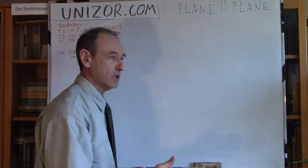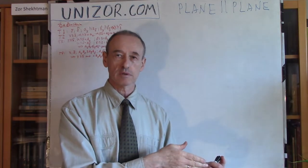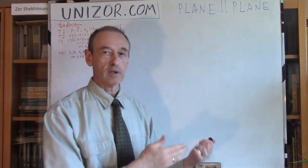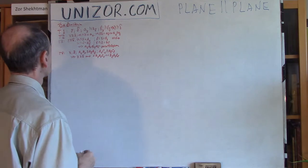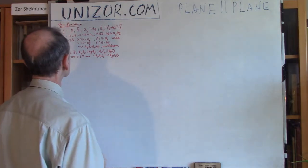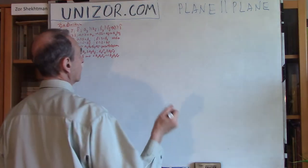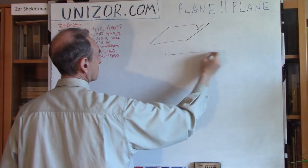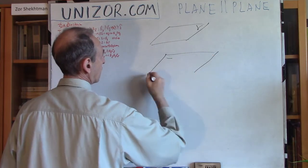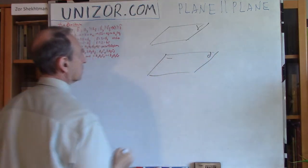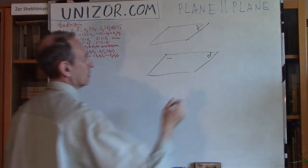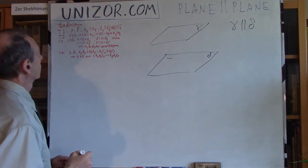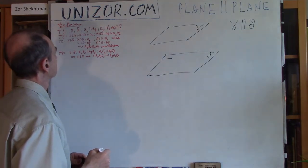That's the first theorem, completely derived from the previous theorems on parallelism between lines and planes. Now, theorem number two. We have two planes, gamma and delta, and in this case we already have as a given condition that they are parallel.